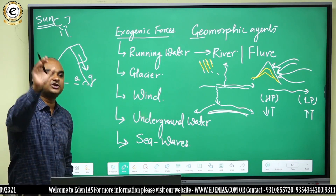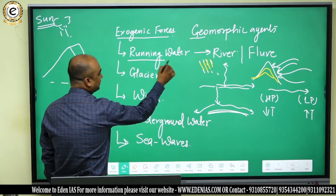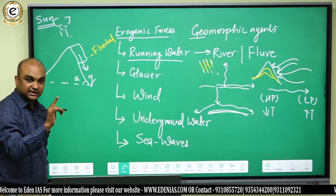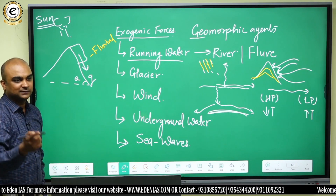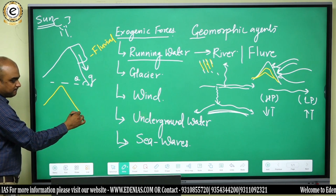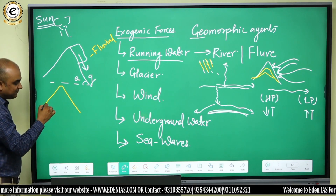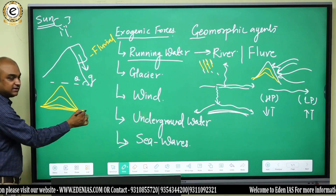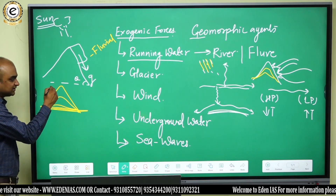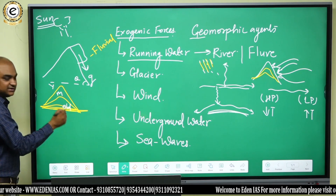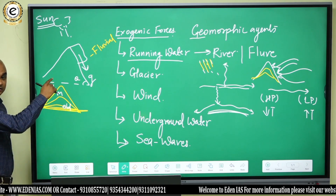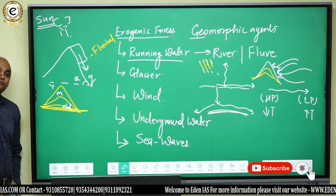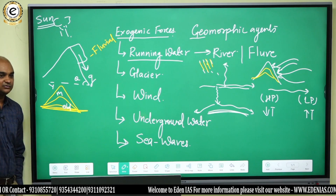Behind each agent there is its own cycle of erosion. The cycle behind running water is known as the fluvial cycle of erosion — one of the strongest. A cycle of erosion means a landform first has a very high height, then with the passage of time its height reduces, and eventually it dies down completely. So you have young stage, mature stage, and old stage of a landform. Young landforms are very high — that's why the Himalayas are called young fold mountains, because they are very high.